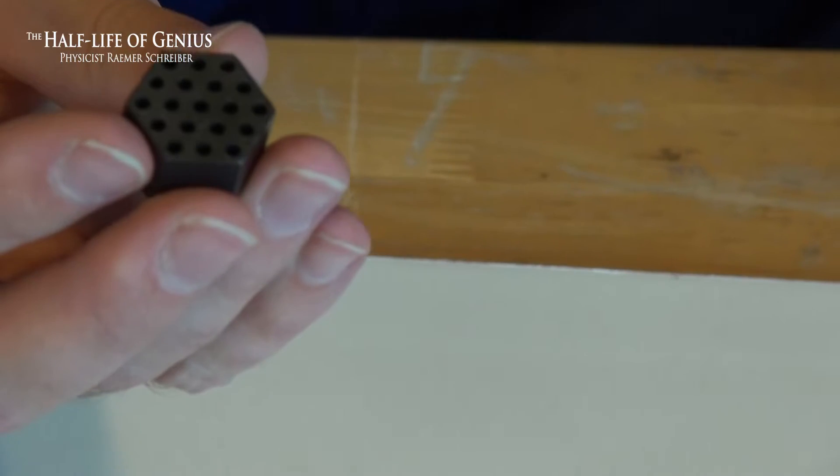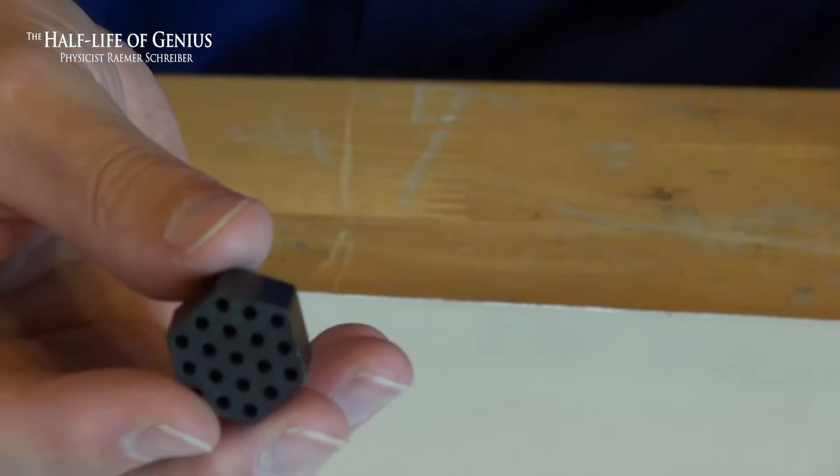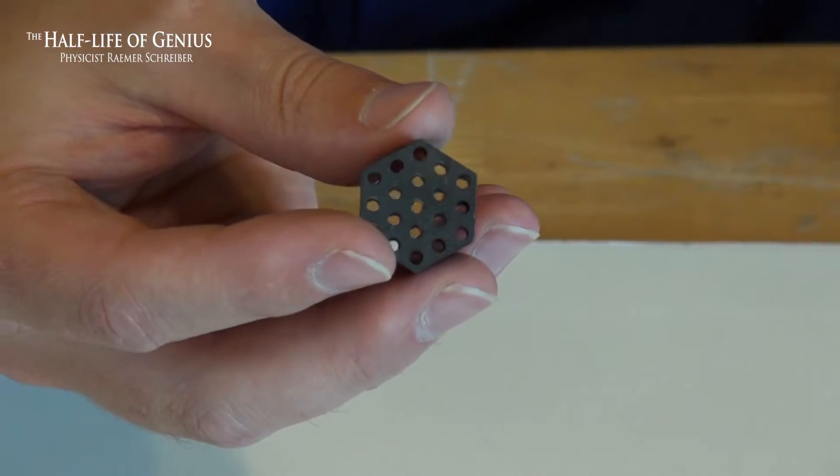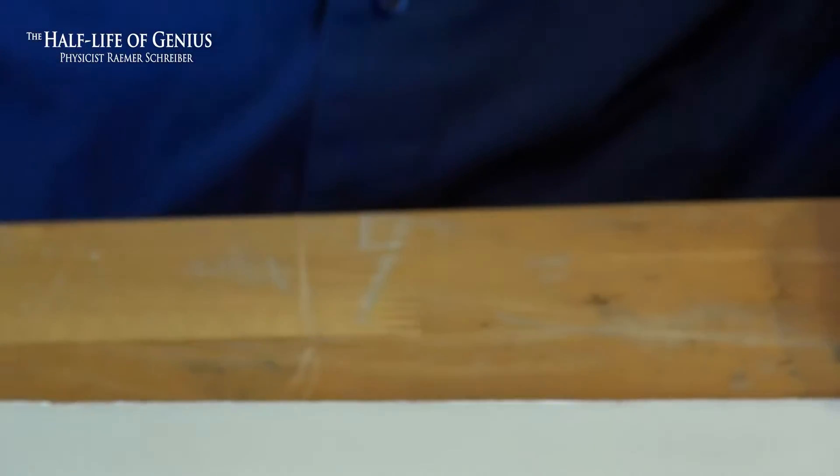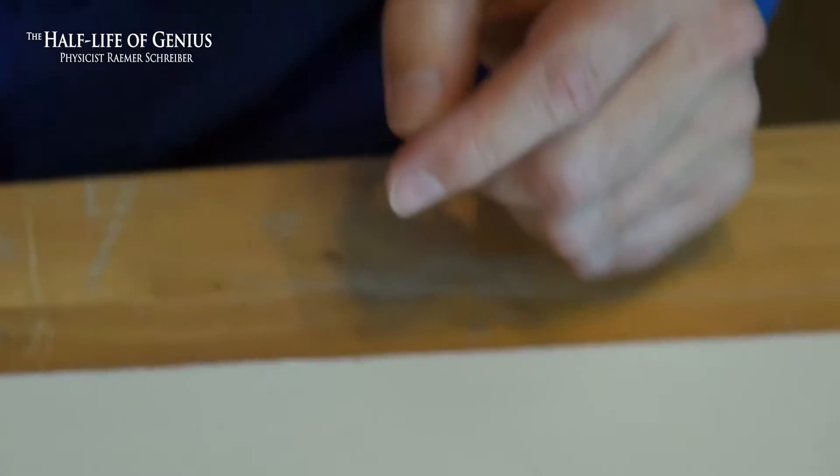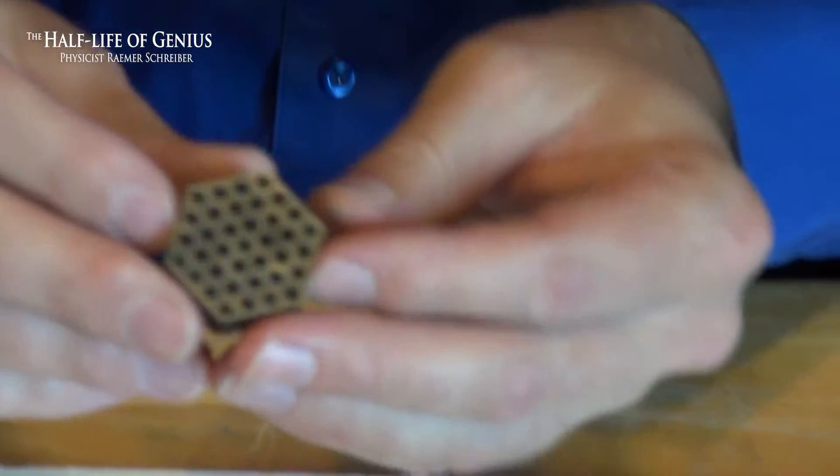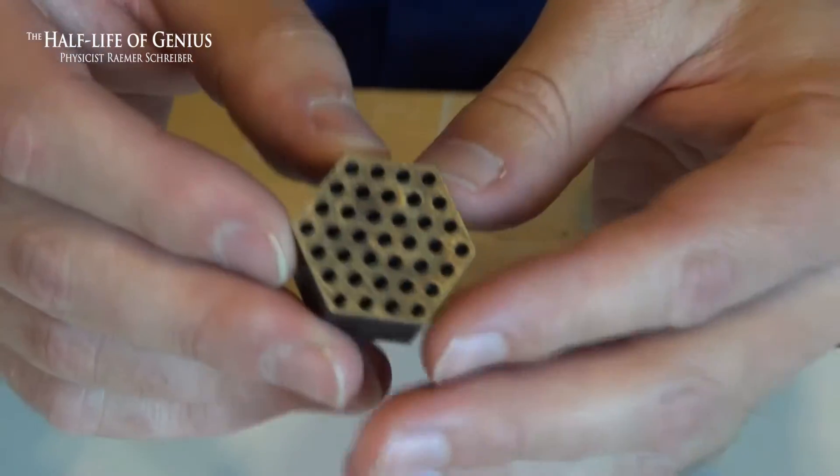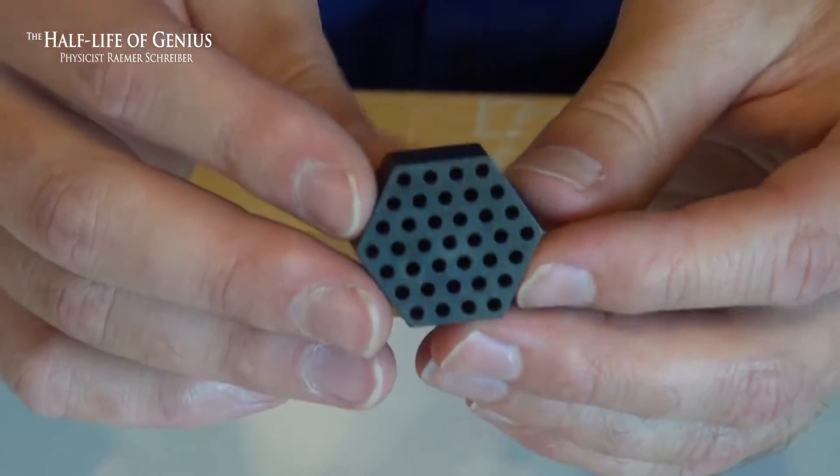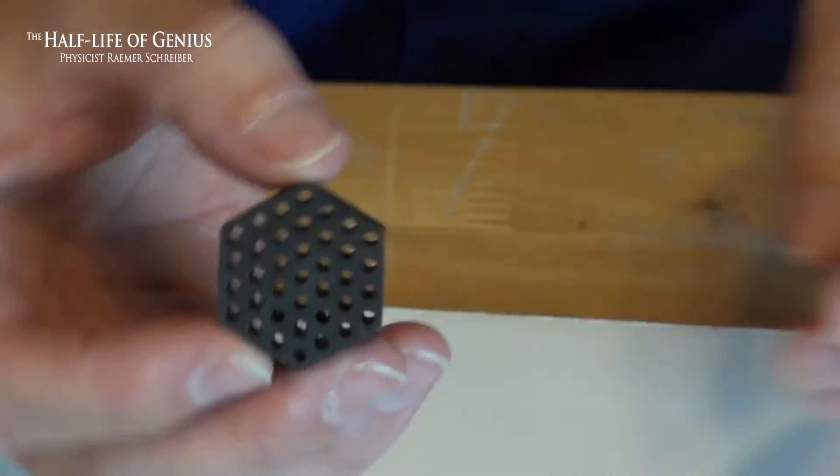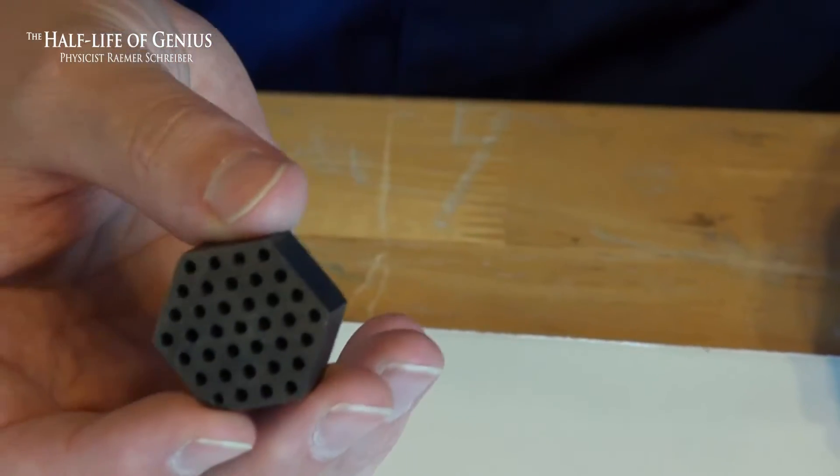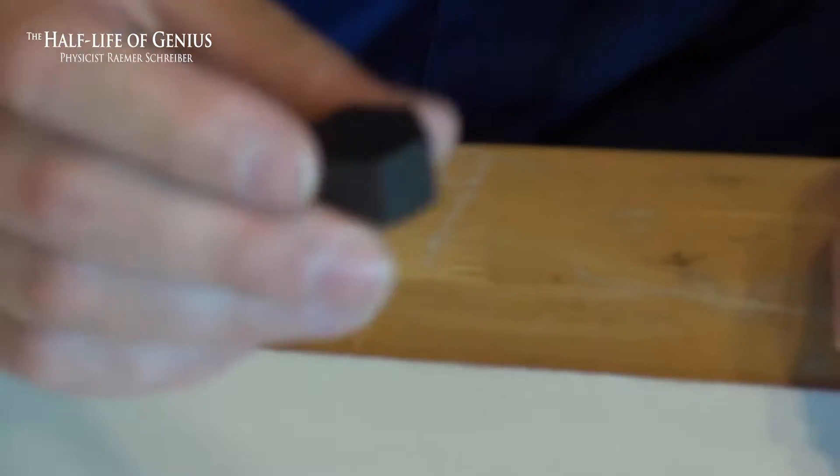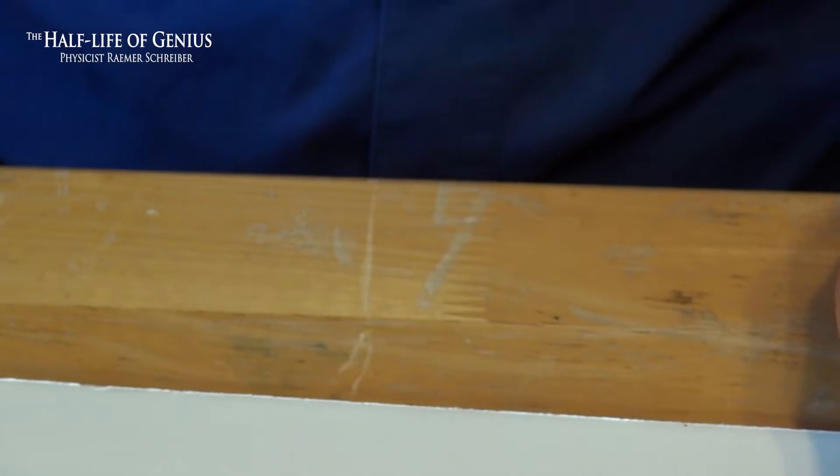And then later on, this was used in the Phoebus test, which were the highest power densities ever achieved in nuclear reactors. So this is what they ended up with. They did some additional tests with these more complex extruded forms. I believe this is 37 holes in this element. This became too complicated and they had trouble with the dies and so forth. So they mostly stuck with 19-element hexagonal fuel.